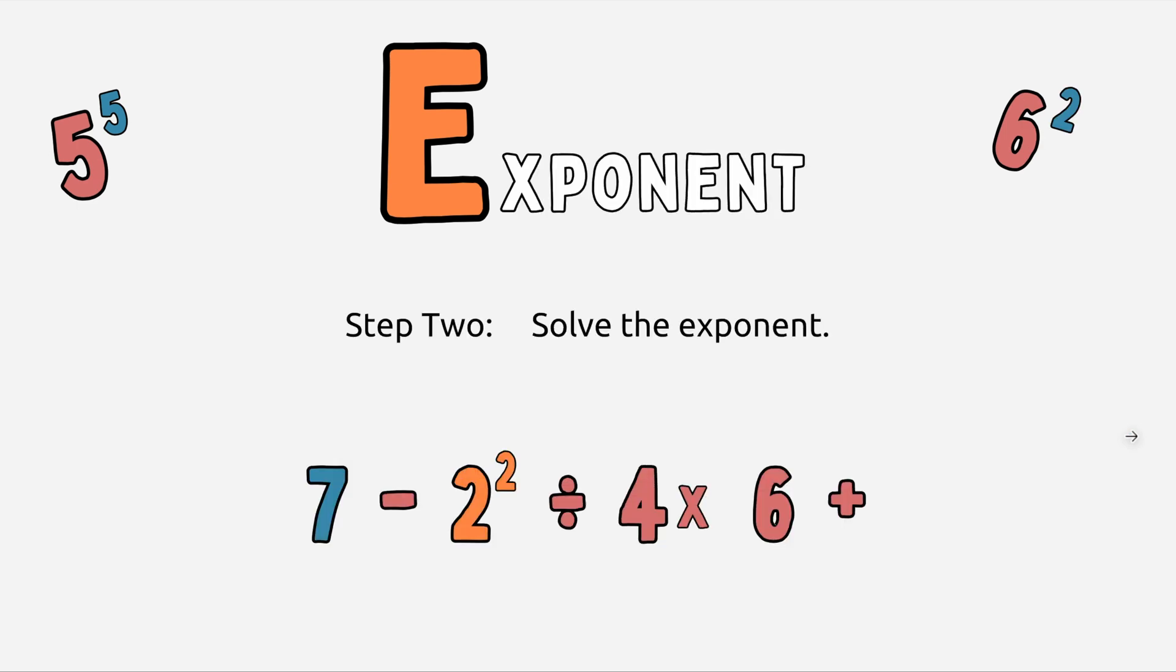As you can see, our 7 down here has turned blue because it's finished, and now we can move on to our second step, which is exponent. An exponent is a small number up here that determines how many times you are multiplying the base number by itself. 2 times 2 gives me 4, or 2 to the second power gives me 4.